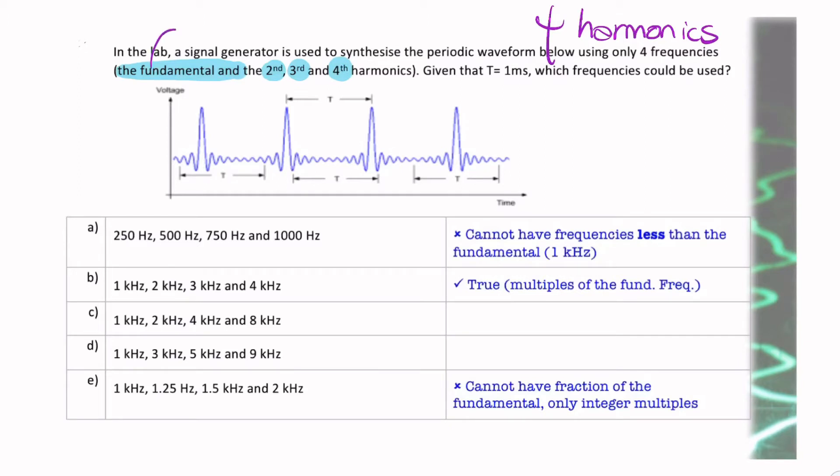So that's the fundamental F0, the second harmonic, which is twice F0, the third harmonic, which is three times F0, and the fourth harmonic, four times F0.